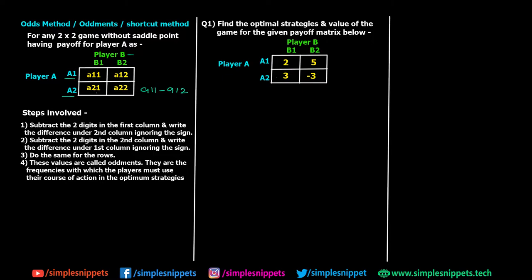Then do the same for A21 and A22 in a criss-cross pattern — that is A22 minus A21, ignoring the sign. Similarly for the columns: compute A11 minus A21 and write it over here, and A12 minus A22 and write it in the corresponding position. So these values calculated in a criss-cross pattern are what are known as oddments.